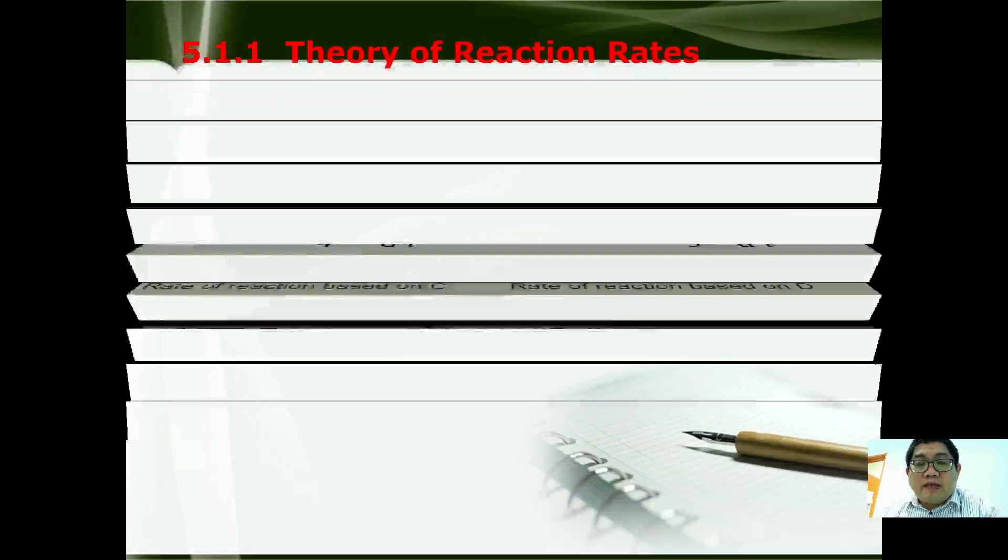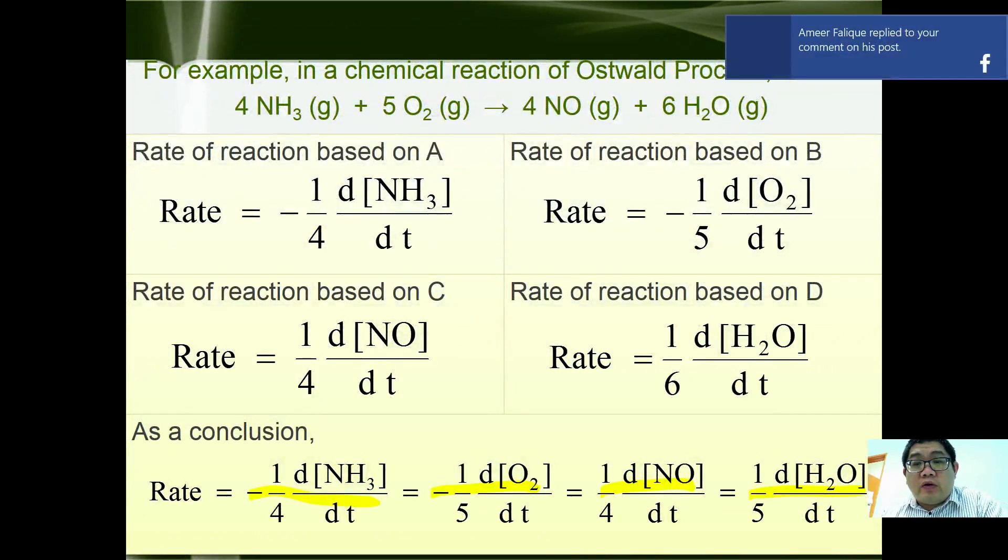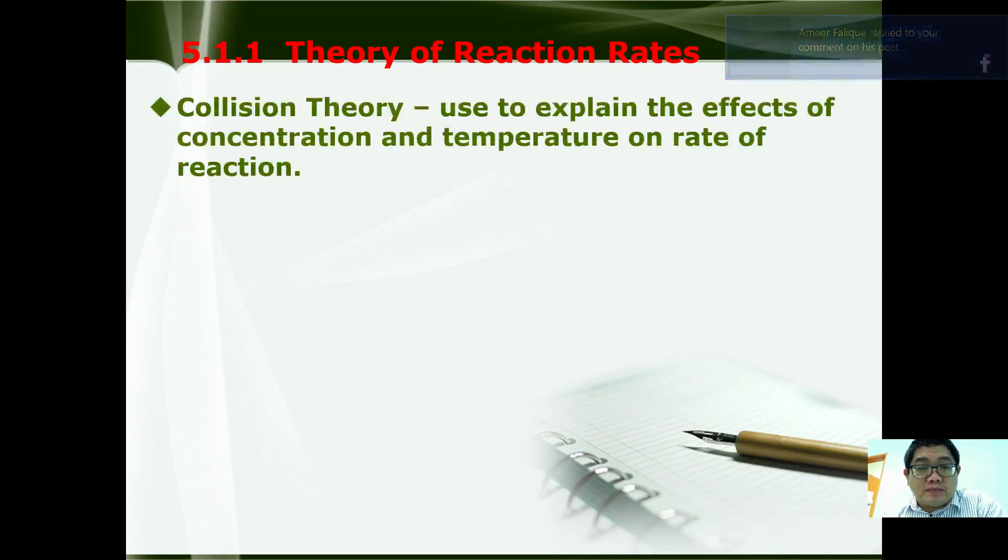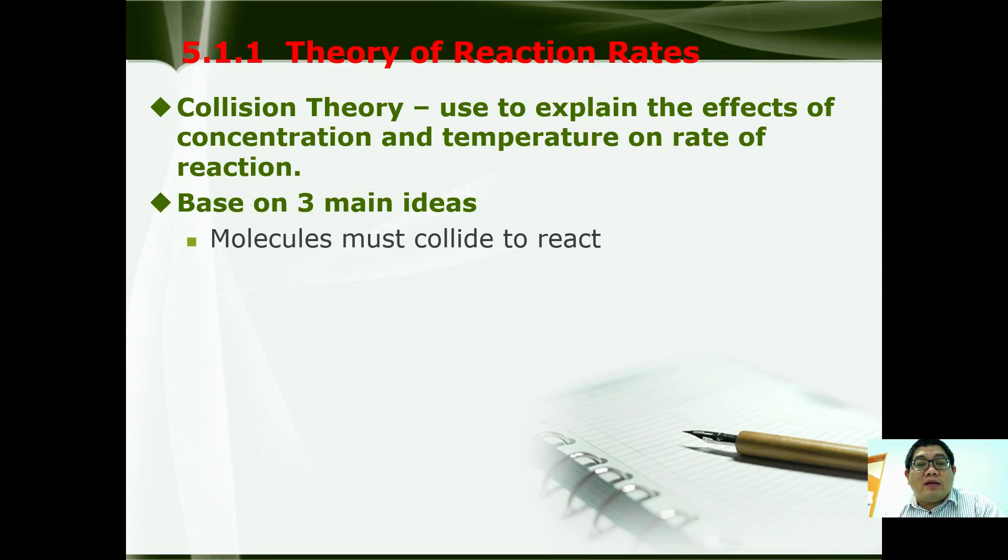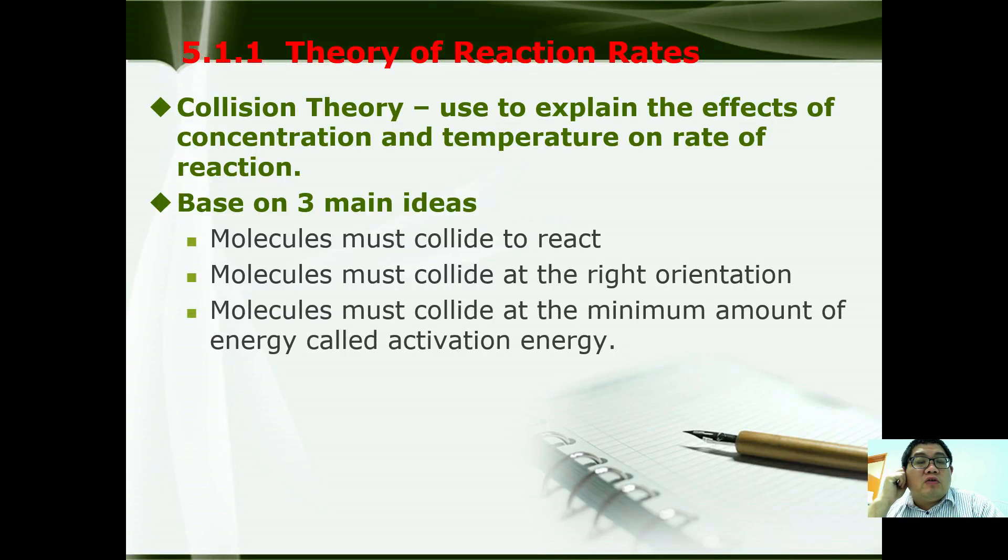So that is all for the introduction. We are going to go into details and learn about the theories of reaction rate. Collision theory is used to explain the effect of concentration and temperature on the rate of reactions. The theory of reaction rate is based on three postulates: Number 1, molecules must collide to react. Number 2, molecules must collide at the right orientation. And number 3, molecules must collide with the minimum amount of energy called activation energy.